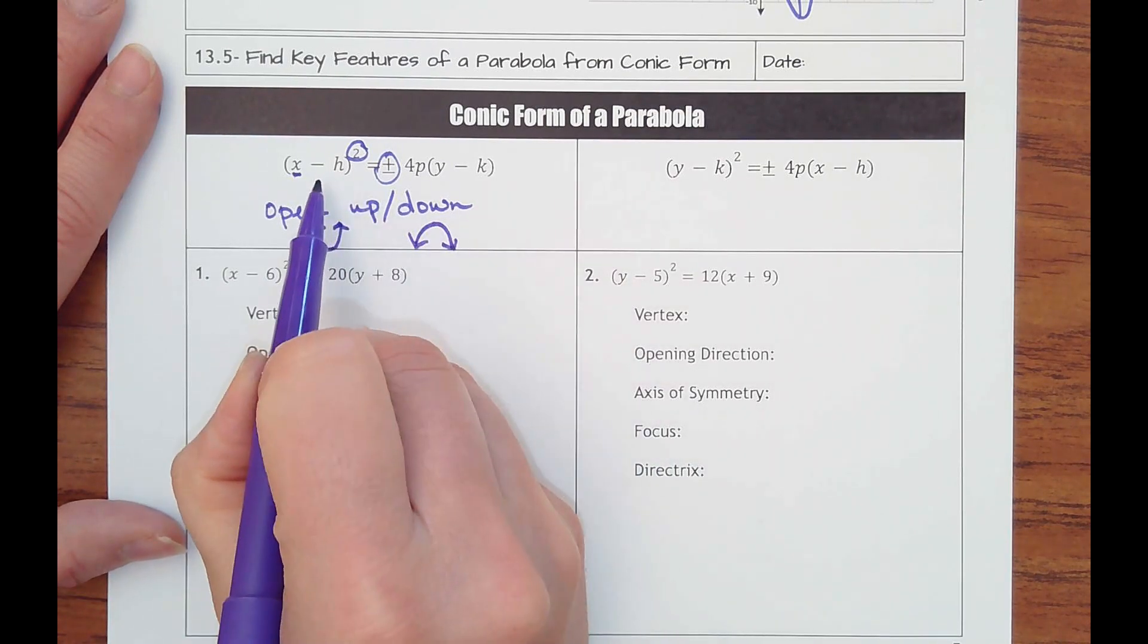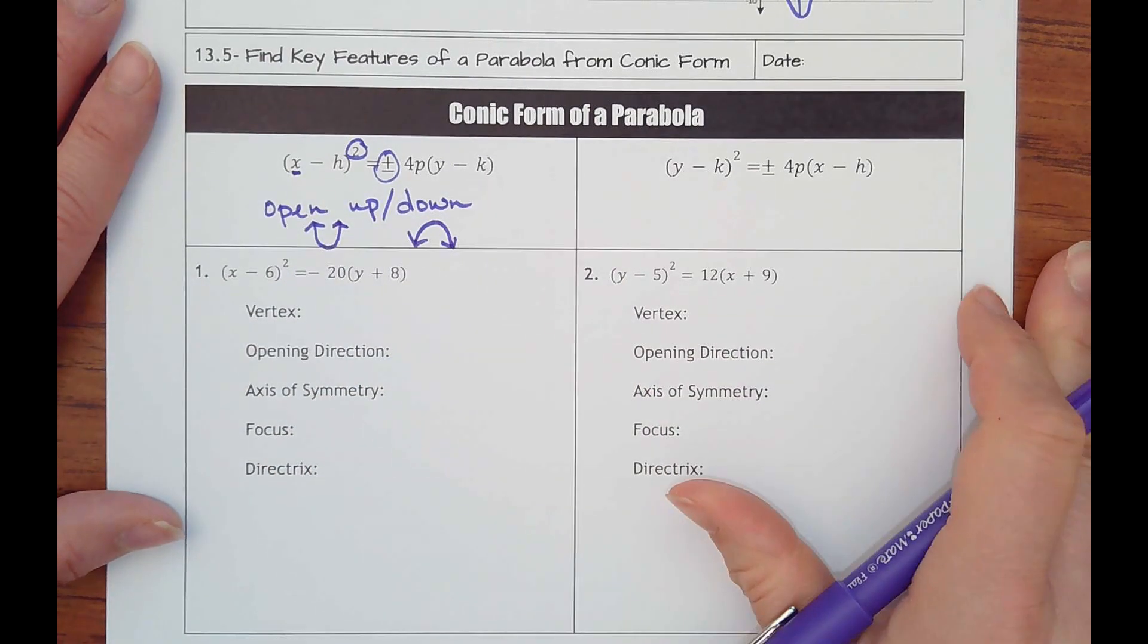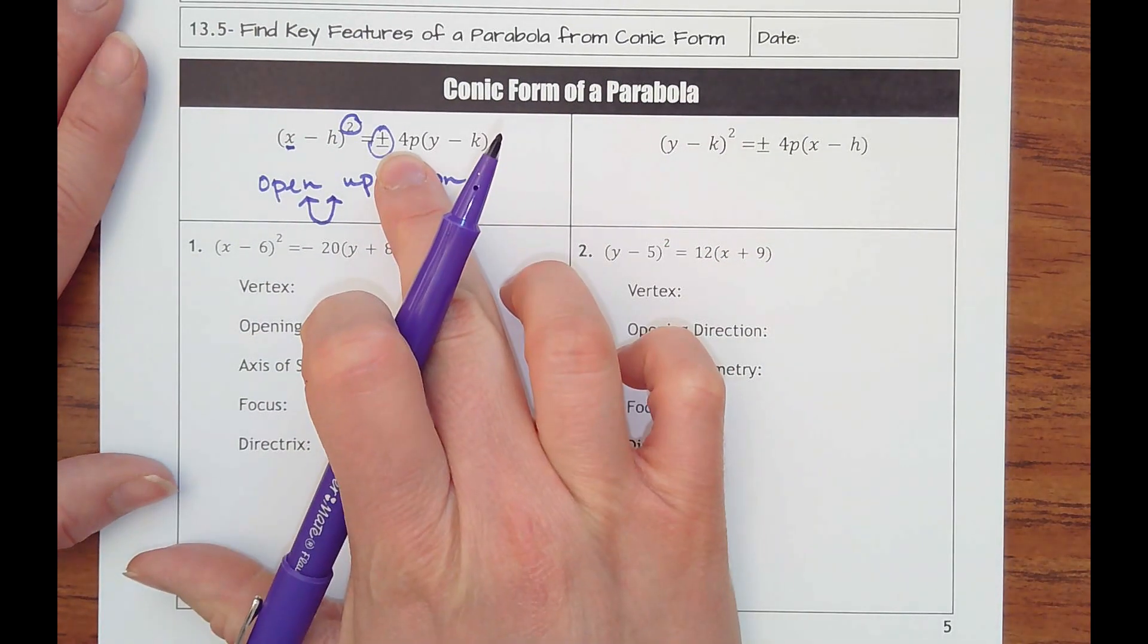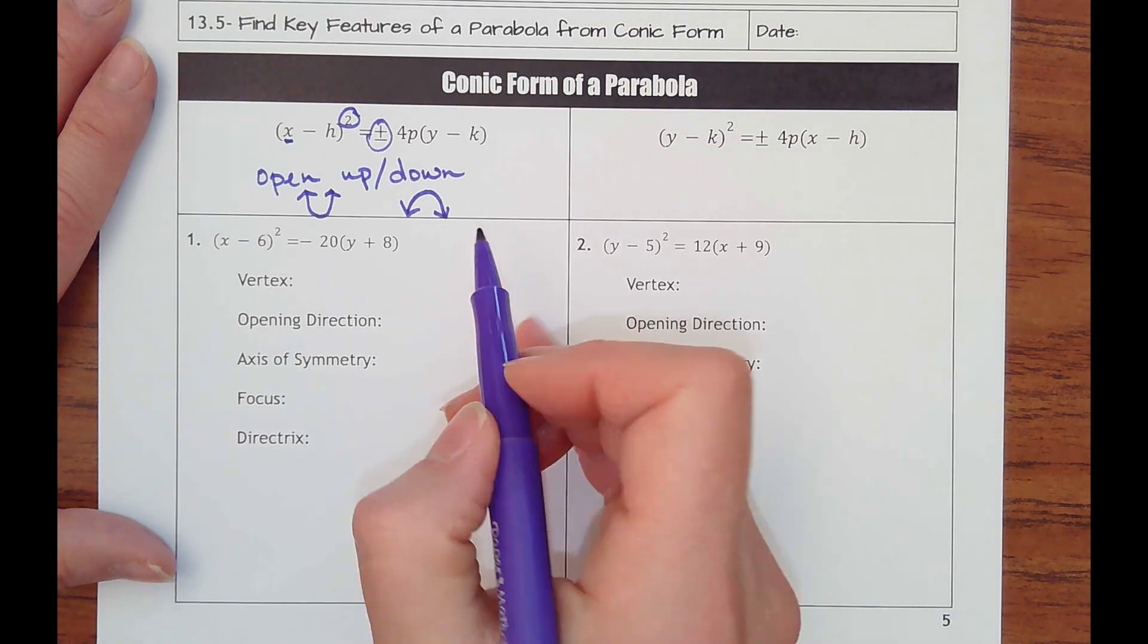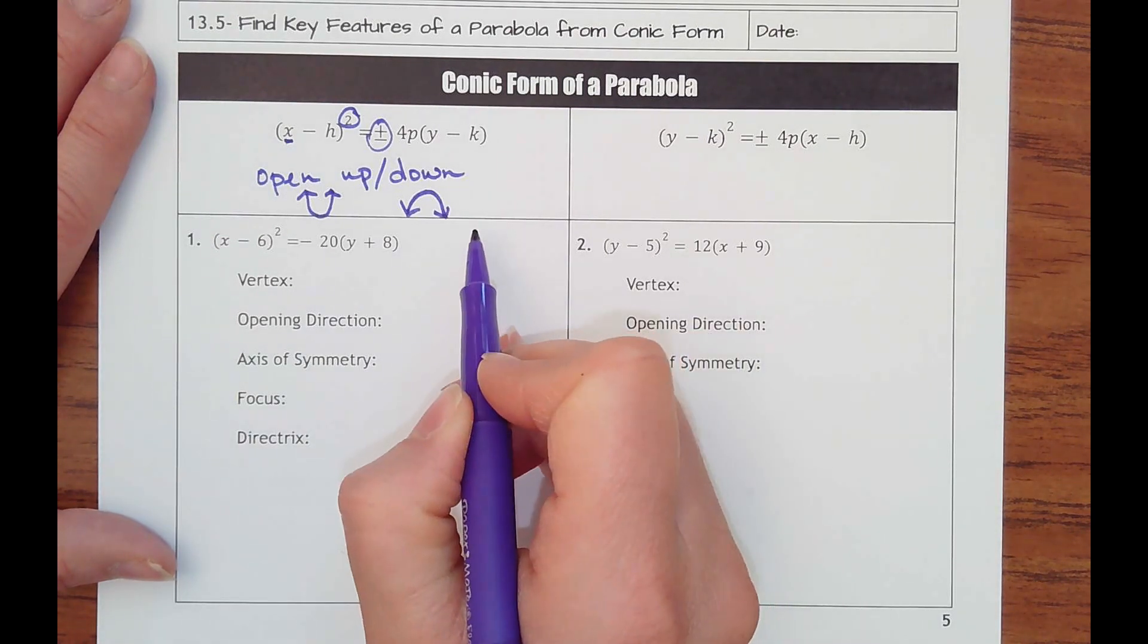The vertex is going to be at h, k every single time. The p value, so always taking that number divided by 4, gives you the p value. That's the distance the vertex is to the focus and to the directrix.